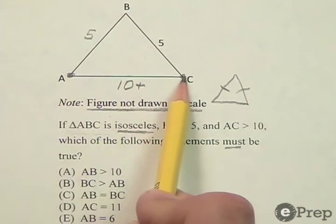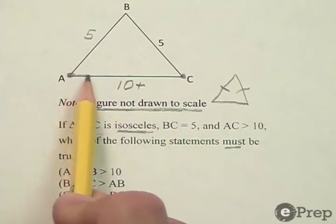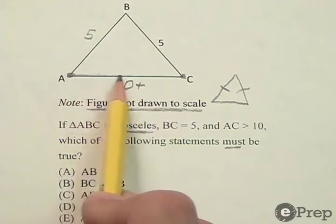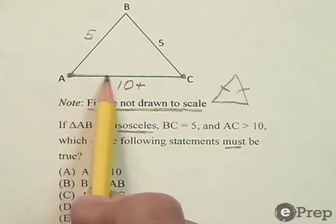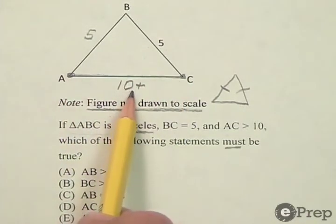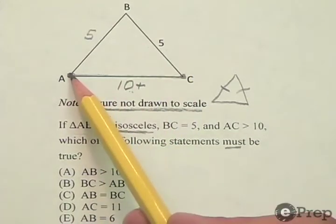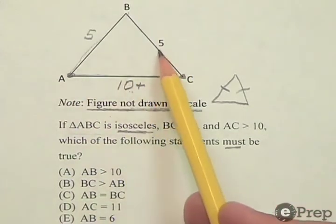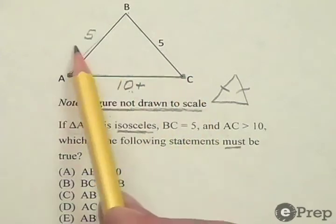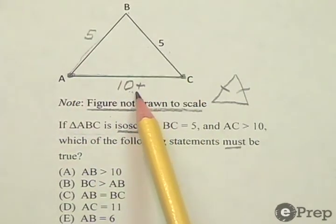this straight line distance from A to C would have to be the shortest way to get from A to C. And this shortest way is more than 10. Which means that I can't go this way, 5 and 5, which is way out of the way, and have it be 10, which is less than this way.